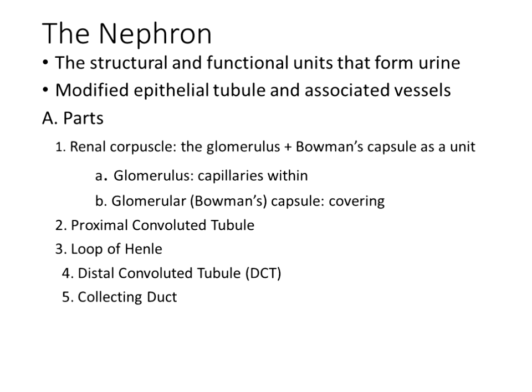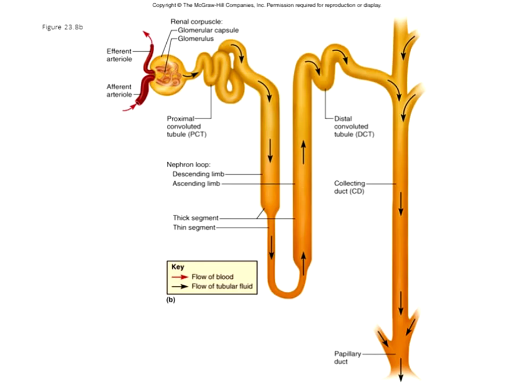The distal convoluted tubule (DCT) has simple cuboidal cells but with fewer microvilli and fewer mitochondria than the PCT. Instead, it has more hormone receptors — for ANP, BNP, aldosterone from the adrenal cortex, and some ADH — where hormones exert their effects. The collecting duct has simple cuboidal cells that are low in mitochondria and respond only to ADH. By the collecting duct, ADH is the last-ditch effort to influence water movement between filtrate and interstitial fluid.